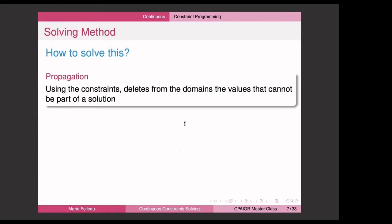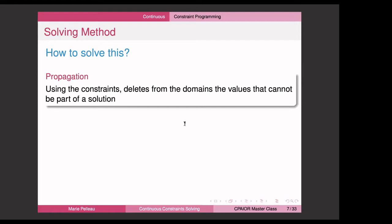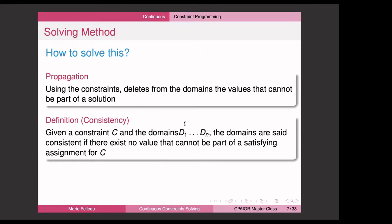So how does it work? When you want to solve a CSP problem, you use the constraints to propagate and delay from the domains values that cannot be part of a solution — this is called propagation. This does not depend on whether your variables are discrete or continuous. We use something called consistency: given the constraints and the domains, they are consistent if there exists no value that cannot be part of a solution. Once propagation is done, you go to the exploration step, which depends on the search strategies.